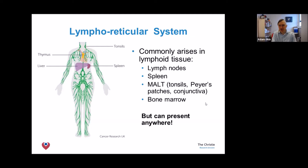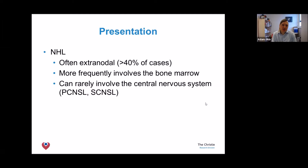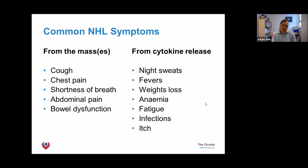Here is a cartoon of the lymphoreticular system — the chains of lymph nodes and associated organs like the liver, spleen, thymus, and tonsils. Lymphomas commonly arise within this system, but lymphomas can actually grow anywhere in the body. Up to 40 percent of non-Hodgkin lymphomas will present with a growth outside of the nodal system — so-called extranodal — sometimes involving the bone marrow and rarely the central nervous system.